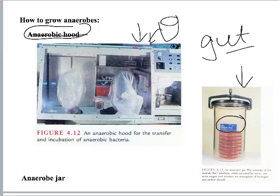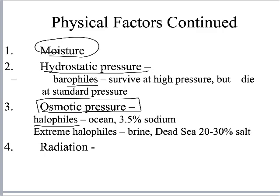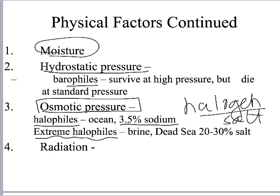Other physical factors include moisture — you don't want organisms to dry out. Hydrostatic pressure: some microbes, called barophiles, survive at high pressure but may die at standard pressure, so pulling them from deep in the ocean to the surface could kill them. Osmotic pressure is relevant again — halophiles can survive in the ocean at about 3.5% sodium. Extreme halophiles survive in the Dead Sea and the Great Salt Lake, where salt concentrations fluctuate with water levels.